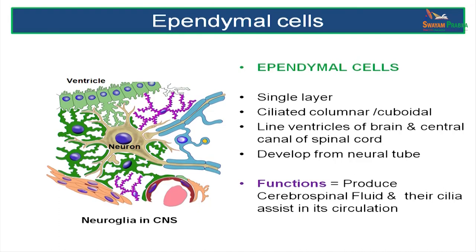The first cell is the ependymal cell, which lines the ventricles of the brain — the fluid-filled cavities within the cerebrum and cerebellum. These cells develop from the neural tube and their function is to produce the cerebrospinal fluid. They have cilia on their surface which help in the circulation of this CSF.